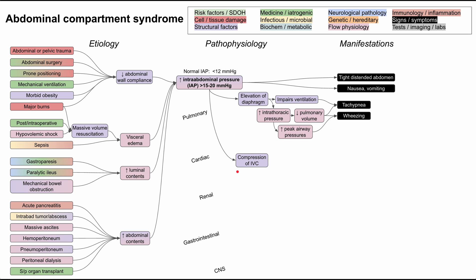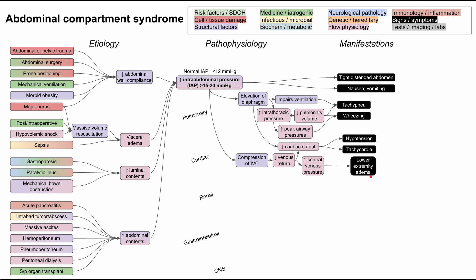For the cardiac system, increased intra-abdominal pressure compresses the inferior vena cava, which is more squishy than the arterial system. This decreases venous return to the heart, reducing cardiac output and raising central venous pressure, leading to lower extremity edema. The reduced cardiac output manifests as hypotension, and tachycardia develops as the body compensates. Additionally, elevation of the diaphragm restricts cardiac expansion during diastole, further contributing to decreased cardiac output.